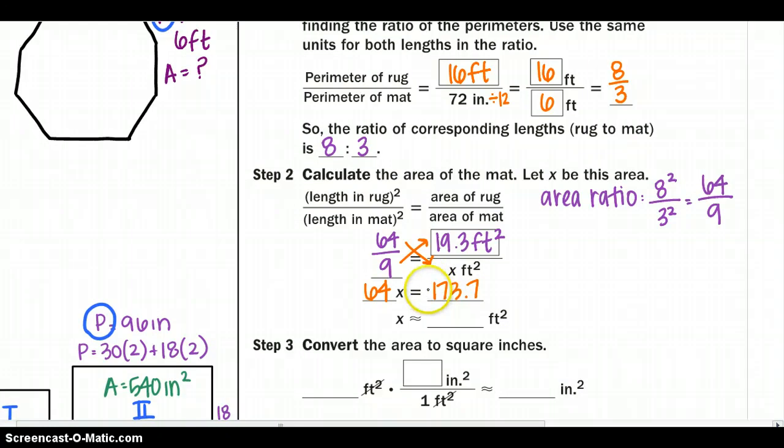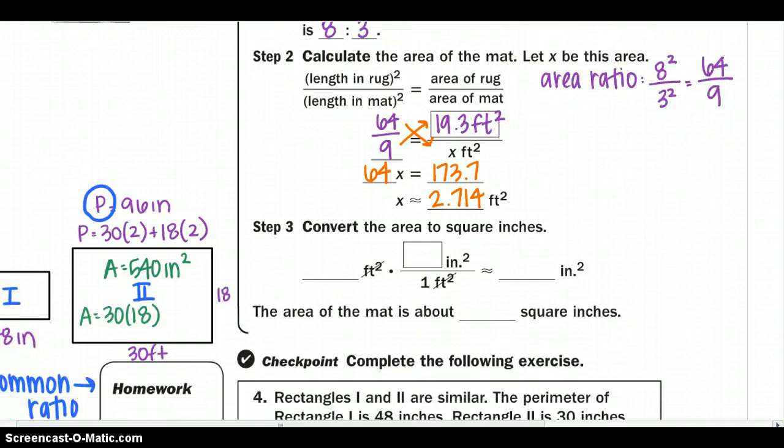I want to get it to inches. So let's do our conversion - 2.714 feet. And I know there's 144 inches squared in 1 foot squared. So I would get 390.8 inches squared. So my area of my mat would be 390.8 square inches.